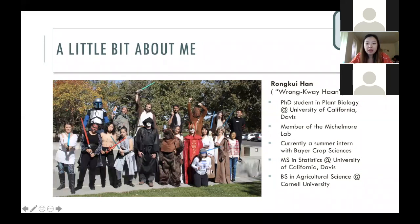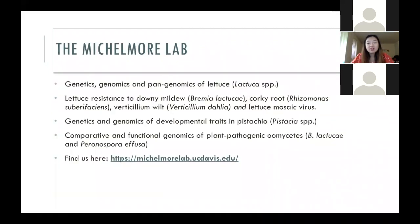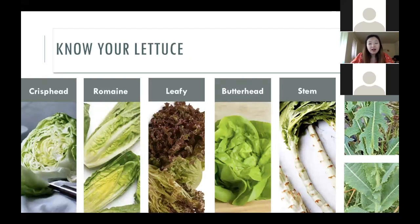My name is Rongkui — it's pronounced 'wrong quay,' like you went the wrong way but with a K. I'm currently a fifth-year PhD student at UC Davis in the Plant Biology graduate group, a member of the Mitchell Moore lab. I'm also a summer intern with Bayer Crop Sciences working with vegetables. I have a master's in statistics from UC Davis, and prior to that I did my undergraduate in agricultural sciences at Cornell University. You can visit our lab at mitchmorelab.ucdavis.edu.